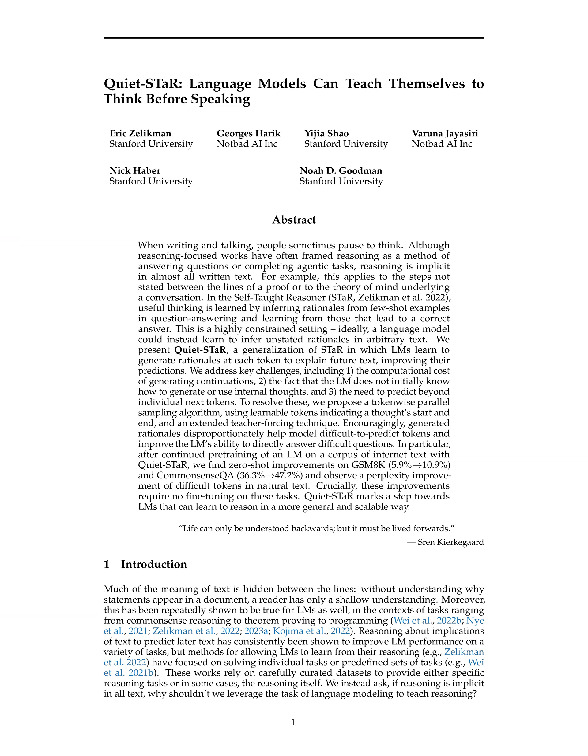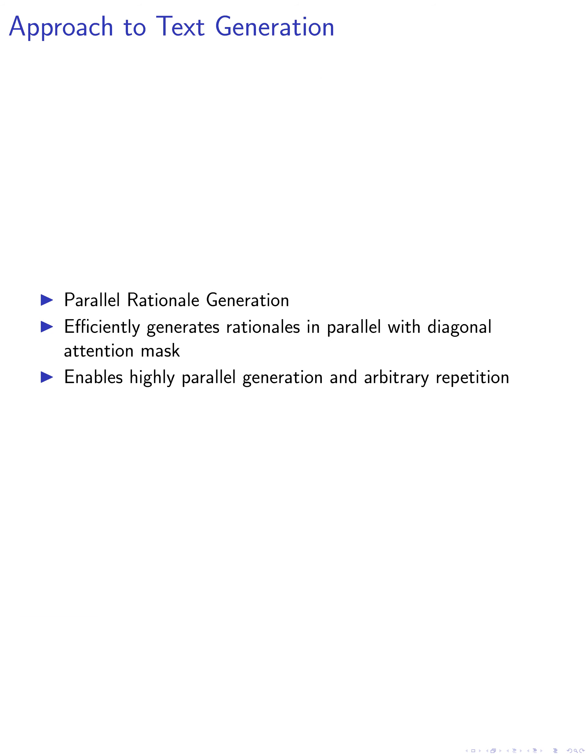In this paper, we present a novel approach to text generation that involves three key steps. The first step, parallel rationale generation, focuses on efficiently generating rationales at each token position in the input sequence in parallel.